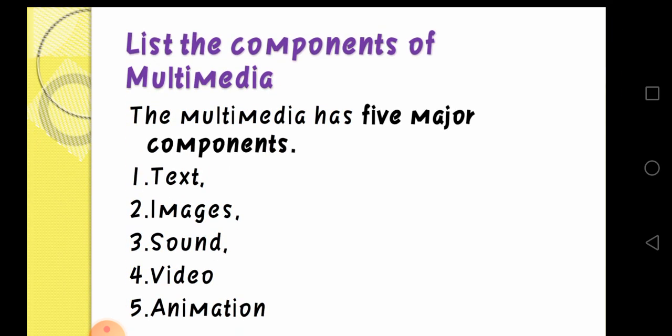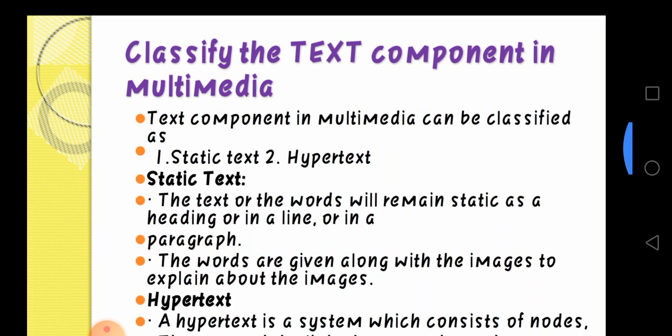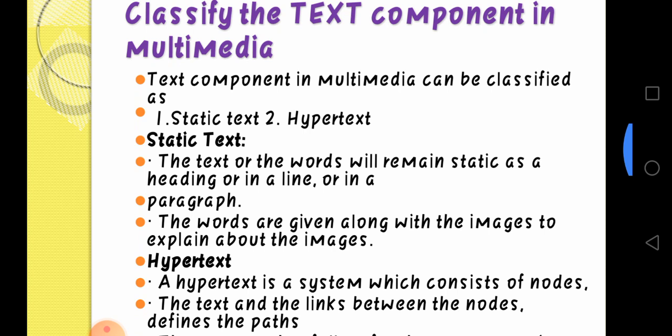Next, list the components of multimedia. There are five major components: text, image, sound, video, and animation. Next, classify the text component in multimedia. There are two text components: one is static text, another one is hypertext. Static text — the words will remain static, as a heading or in a line or in a paragraph.